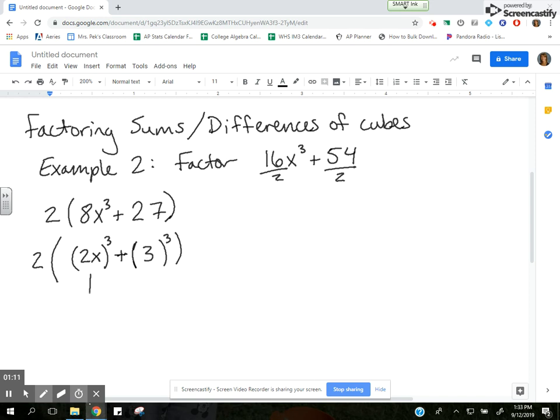And that gives me a little shortcut to getting the first part of my factored form of this sum of cubes. It's going to be (2x + 3).